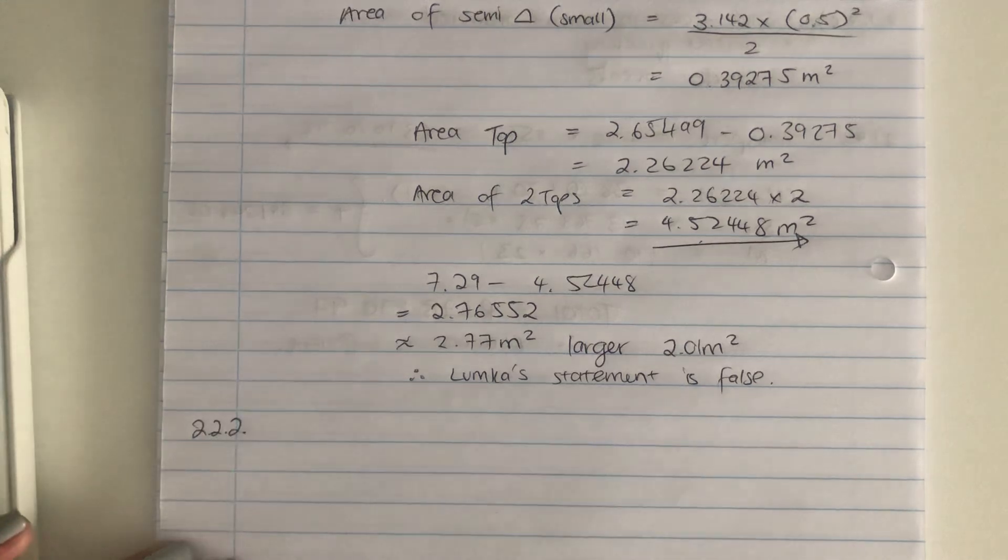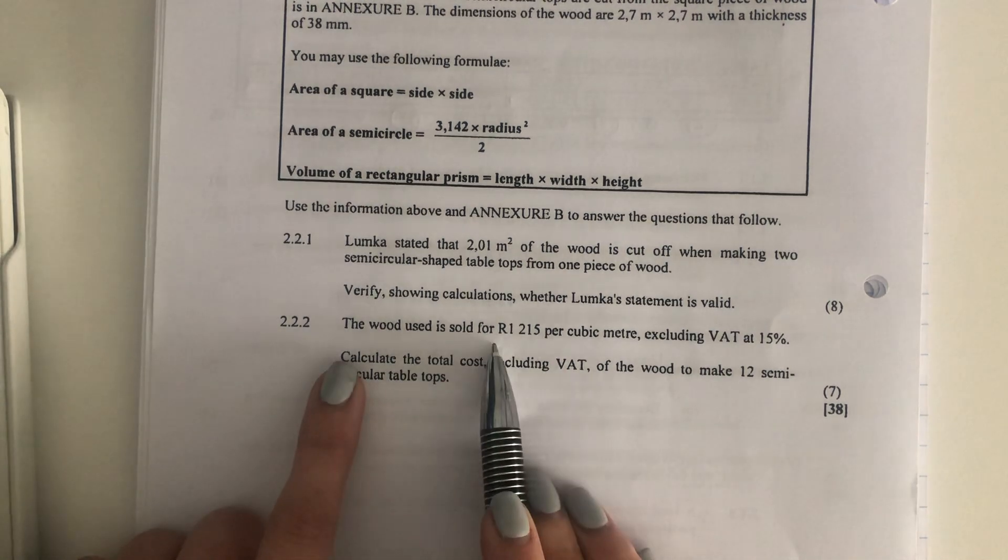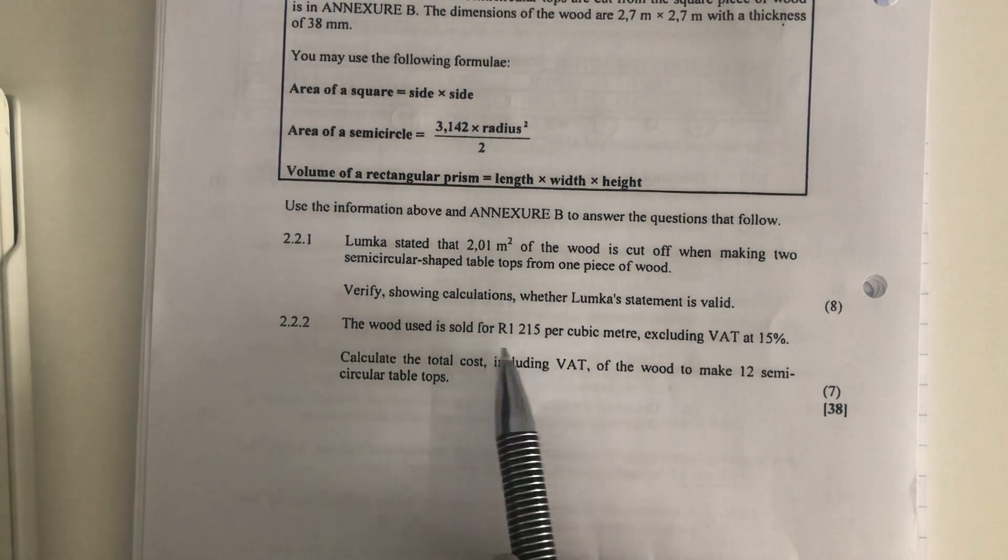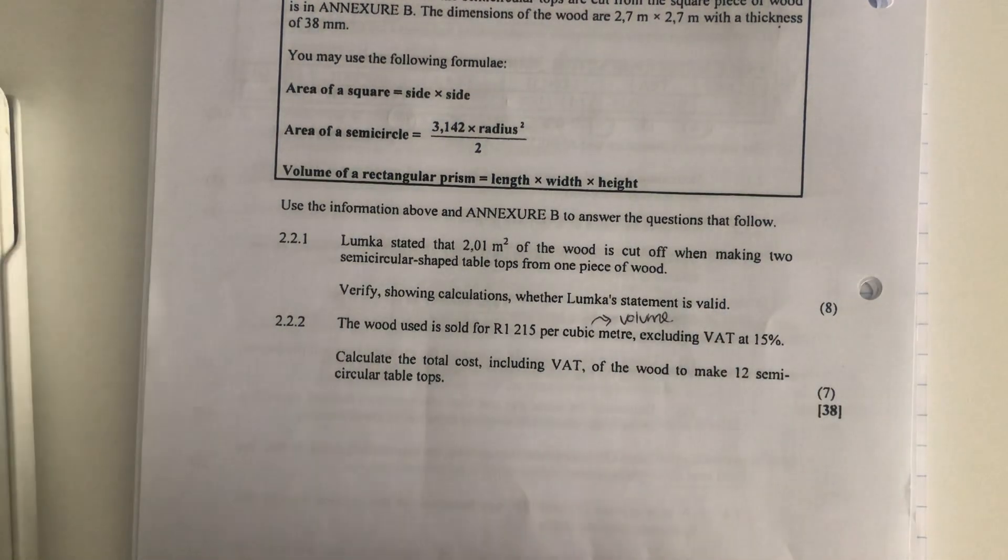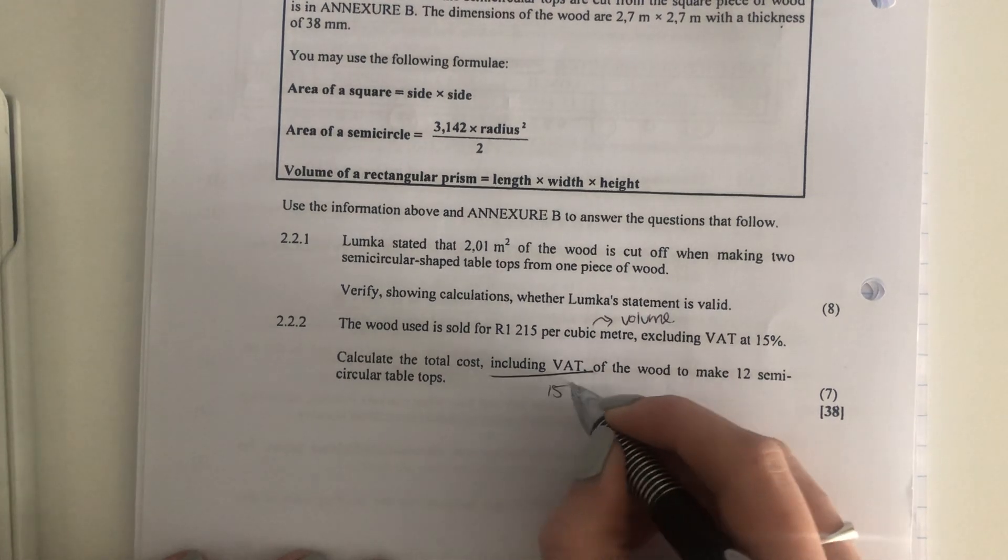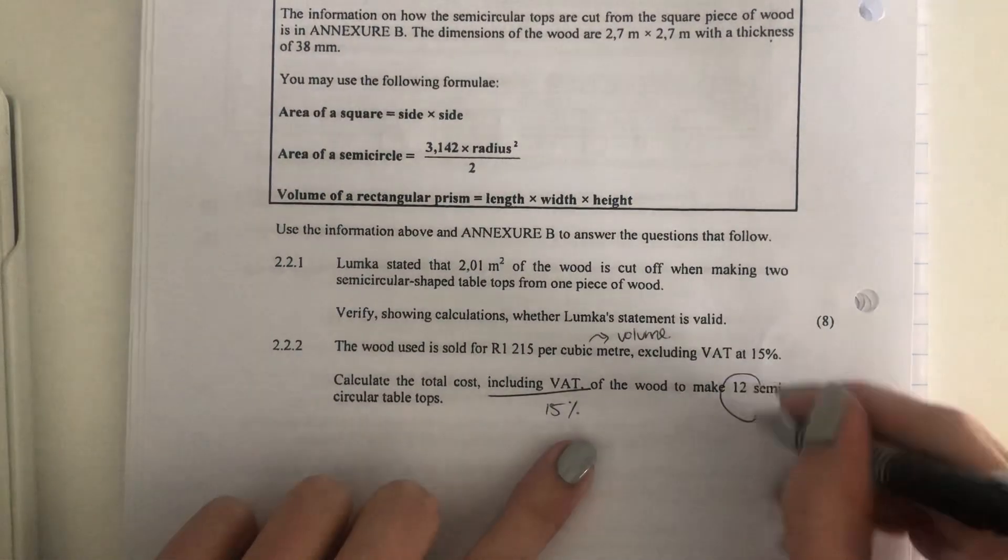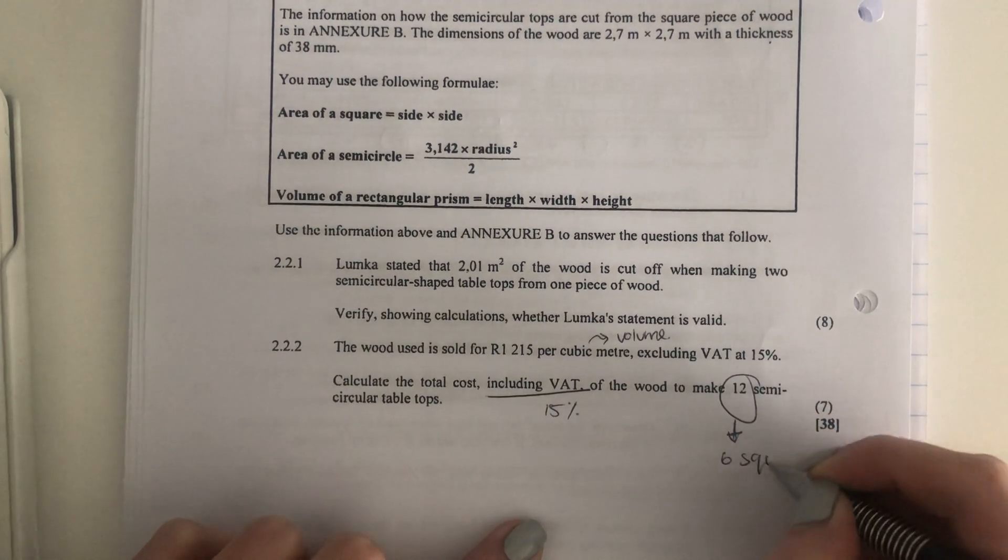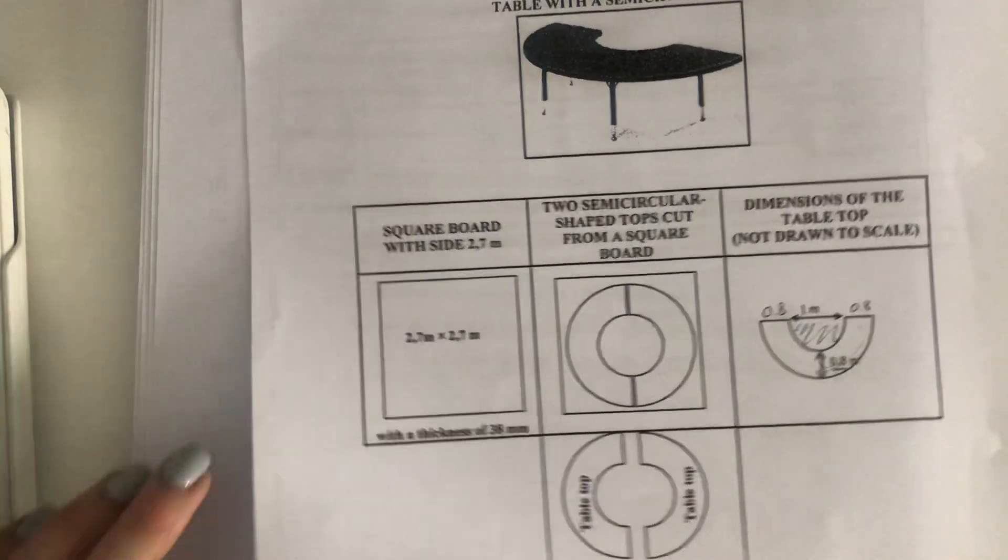Let's go on to our last question of question two. Also quite a big question, but let's make sure we understand it. So it says, The wood used is sold for 1,215 rand per cubic meter. Cubic indicates what? Volume. Good. Not area. Excluding VAT at 15%. Calculate the total cost, including VAT. What is VAT? You need to know this percentage. 15%. So we're going to have to work out the cost and then add VAT of the wood to make 12 semicircular tabletops. So there's 12. So how many squares am I going to need? I'm going to need six squares. Because remember, each square has two tabletops on it, as we can see here in the annex. So be careful there to make sure that you understand that.